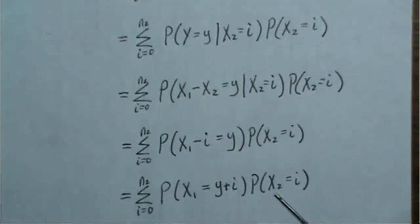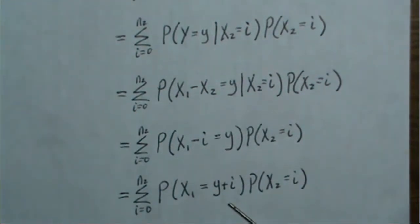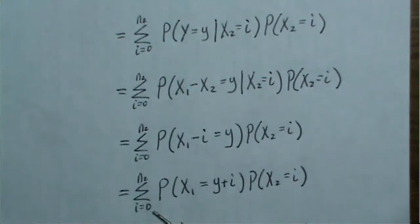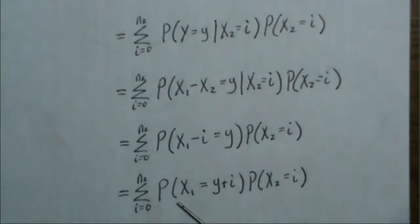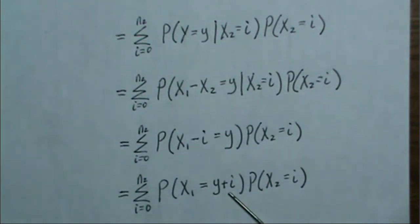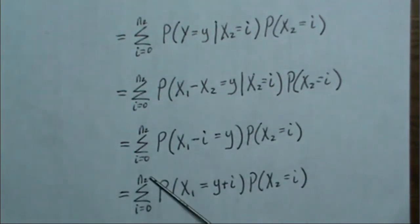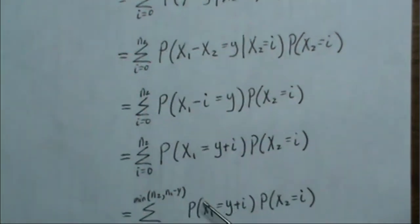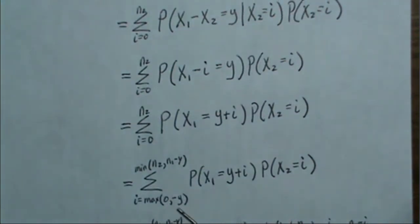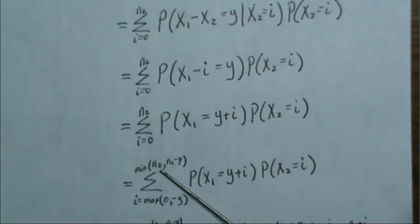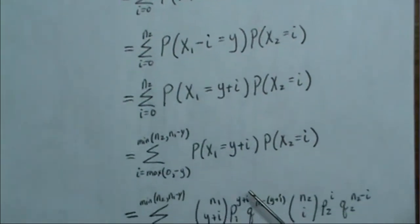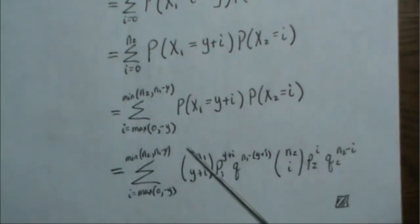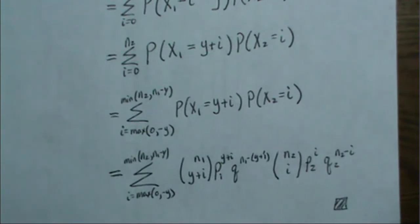Now what's interesting here, we know the density of X1 and X2, so these are simple to plug in. But one note here is that if we go from 0 to N2, some of these won't make sense, meaning this value here can be negative, which means this probability is 0. It exists non-zero when i goes from the maximum of 0 and Y to the minimum of N2 and N1 minus Y. Well, now let's plug in into our densities. And this is exactly the same as what we derived before. So the same result derived in two different ways. Now I'm going to quickly illustrate this in R.